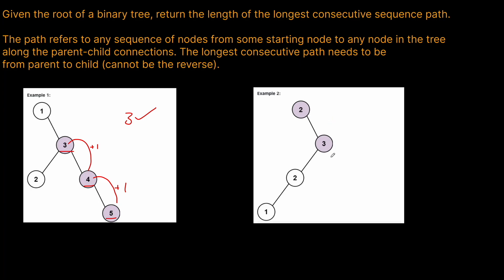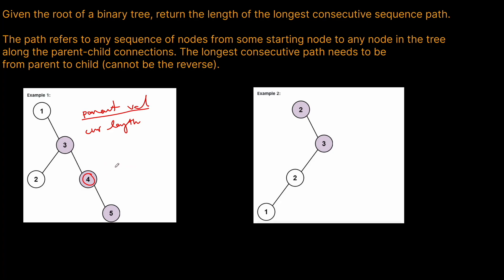The way we solve this is really simple. We want to do a top-down depth-first search through our tree. As we go, we're going to maintain the parent value and the current length of the longest chain built so far. When we get to a node, we check if the node's value minus the previous parent value equals 1. If it is, we know we have a consecutive chain, so we add one to our current length, and compare that with our global maximum.